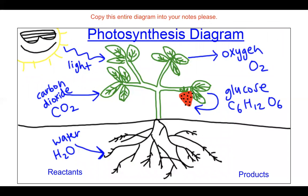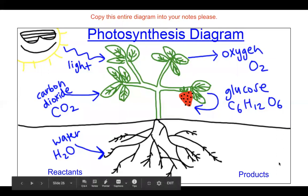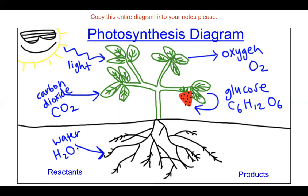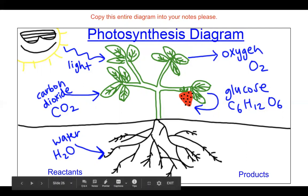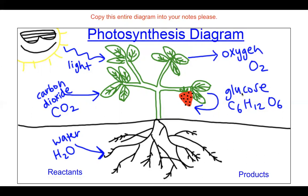You all drew this wonderful diagram, and many of you sent your notes — thank you, they looked great. There are three things that go into the plant, which are the reactants: light is used by the plant, carbon dioxide gets sucked in through the leaves, and water gets sucked up through the roots. The products — the things produced during photosynthesis — are oxygen and glucose, the sugars.